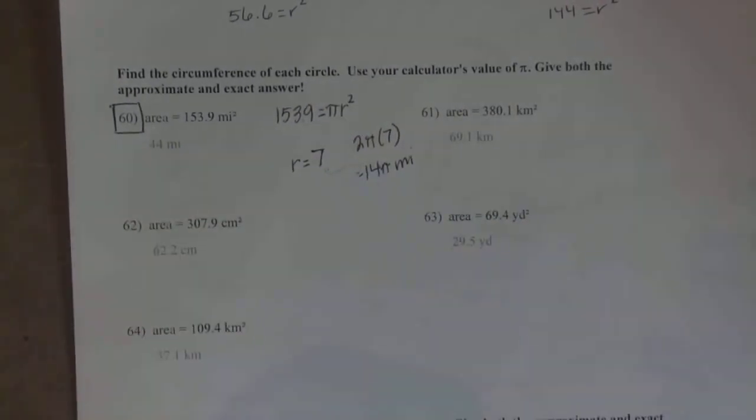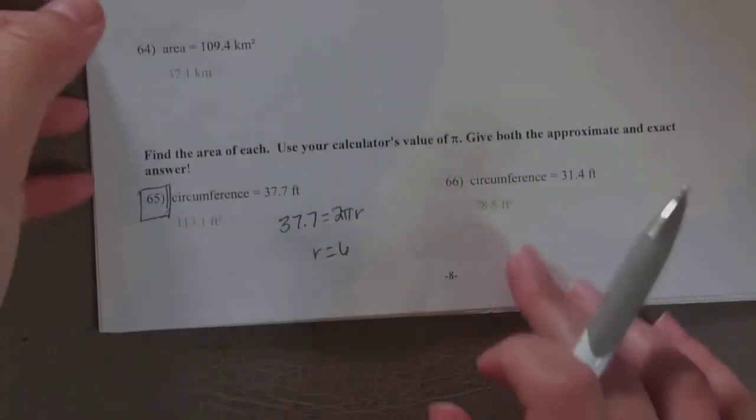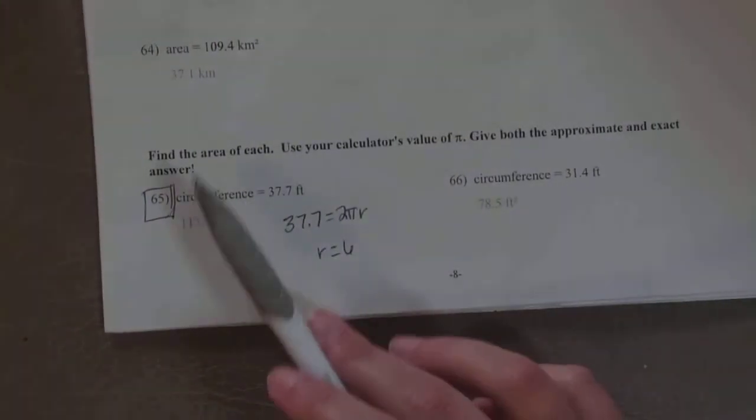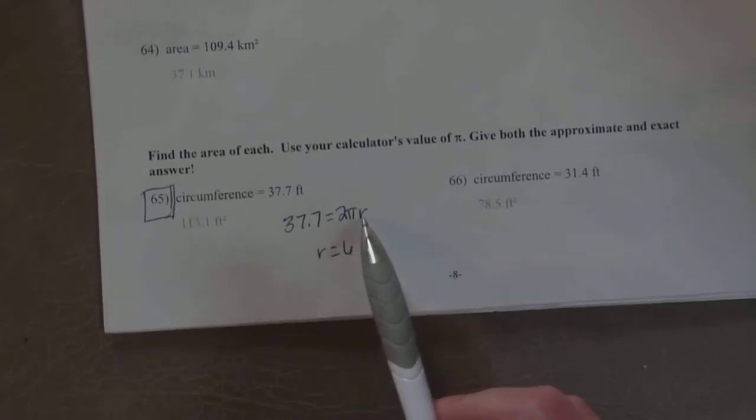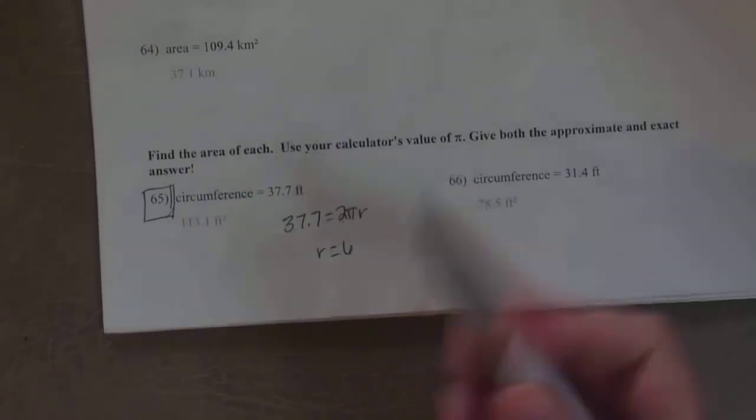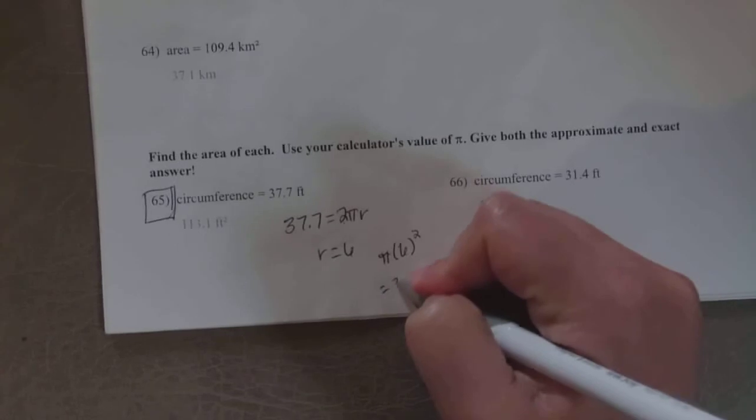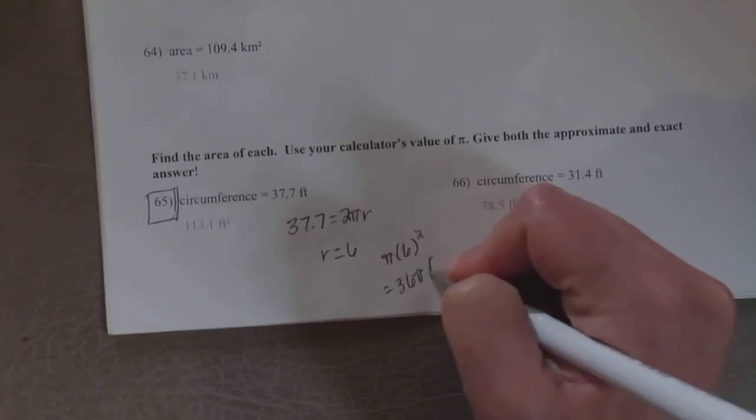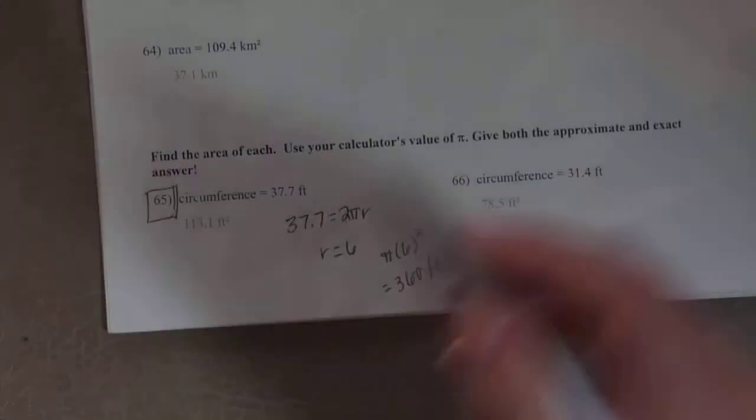Same deal for number 65. Now it's giving you the circumference and asking you to find the area. You have to solve for the radius first. Take your circumference, set it equal to the formula for circumference 2πr. Now you divide by 2π, use your parentheses, and you get 6. Then to find the area, you plug it into π times 6 squared. The exact answer would be 36π feet, and the approximate answer is 113.1 feet squared. The area, your units are always squared.